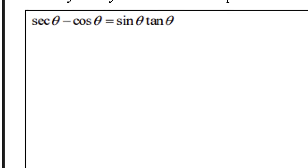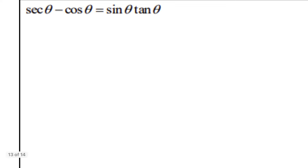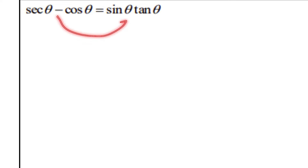Going down to this first one: I want to start on the more complicated side, which has subtraction in it — that tends to be more difficult. Multiplication is our simpler side. It's easier to turn subtraction into multiplication; it's much harder to go the other direction. So taking a look at this first one: secant minus cosine needs to become sine times tangent. The first thing I'll do is recognize that secant and cosine go together as reciprocal identities.